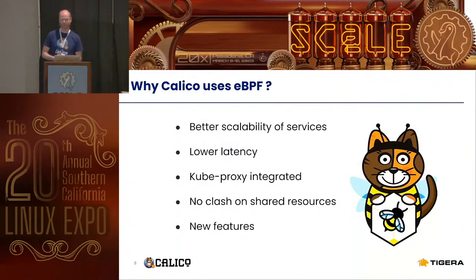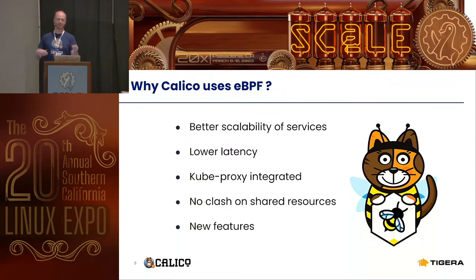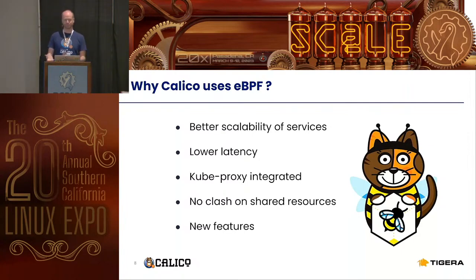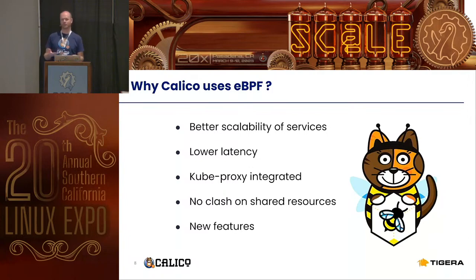So why use a new data plane? One reason is better scalability of services. If you have thousands of services and switch from O(N) to O(1) hashing, you get a big boost. You may get lower latency because of how packets are shuffled through the kernel. Kube-proxy becomes part of the data plane as a single ecosystem, so there is no clash on shared resources. And it gives you the option to implement new features that you would not be able to get upstream in Kubernetes or would have to wait a long time for.